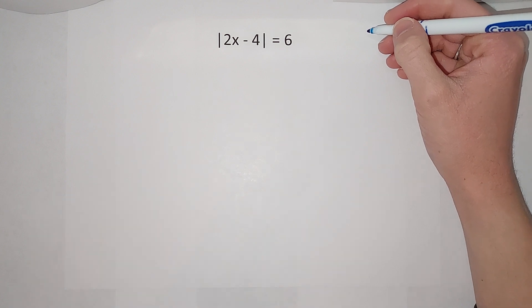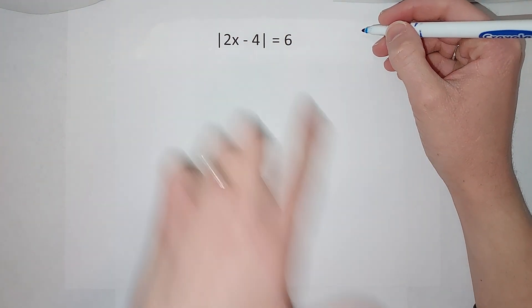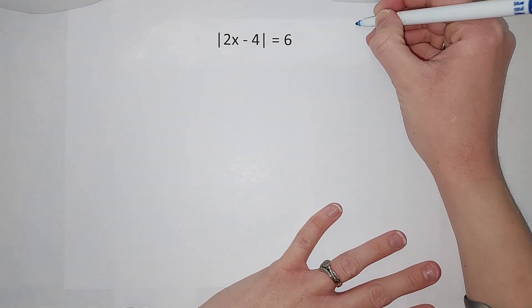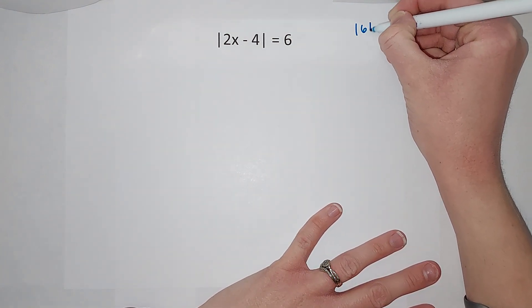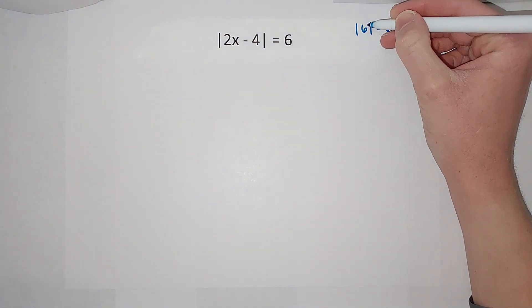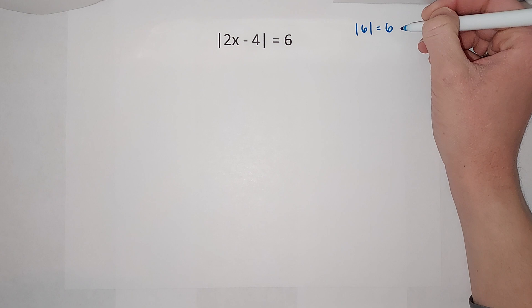It's asking how far is this number inside here from zero. So if I have the absolute value of six, it's equal to six, right? The distance six is from zero is six.